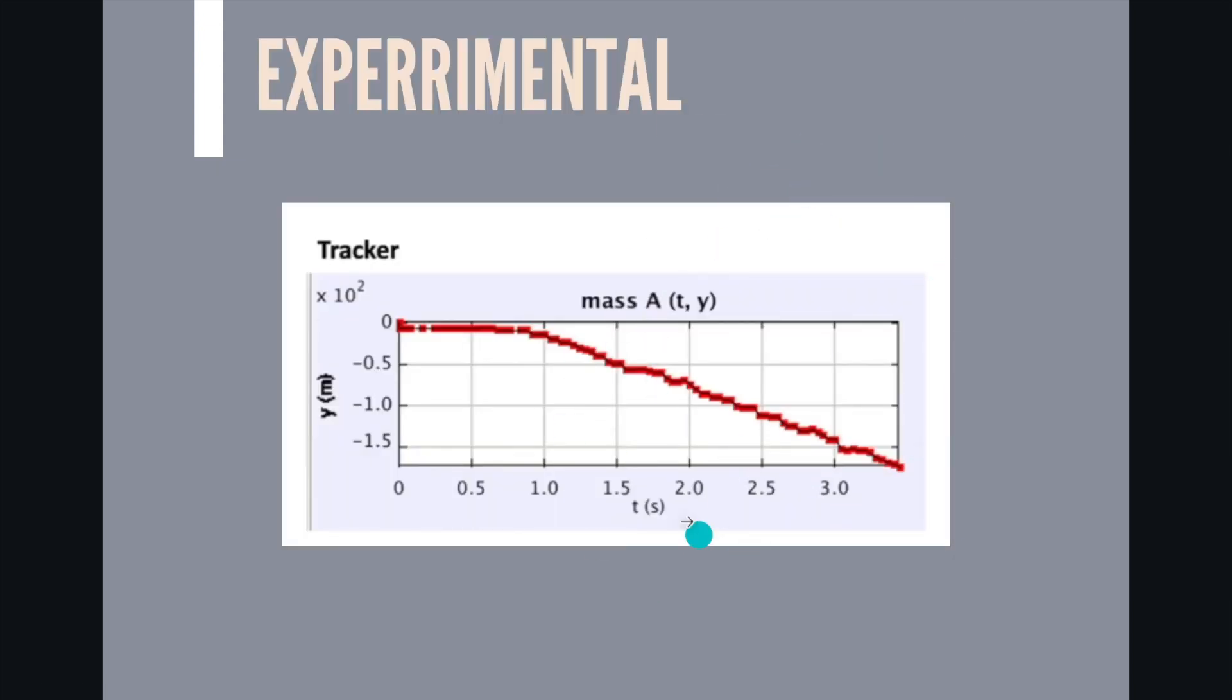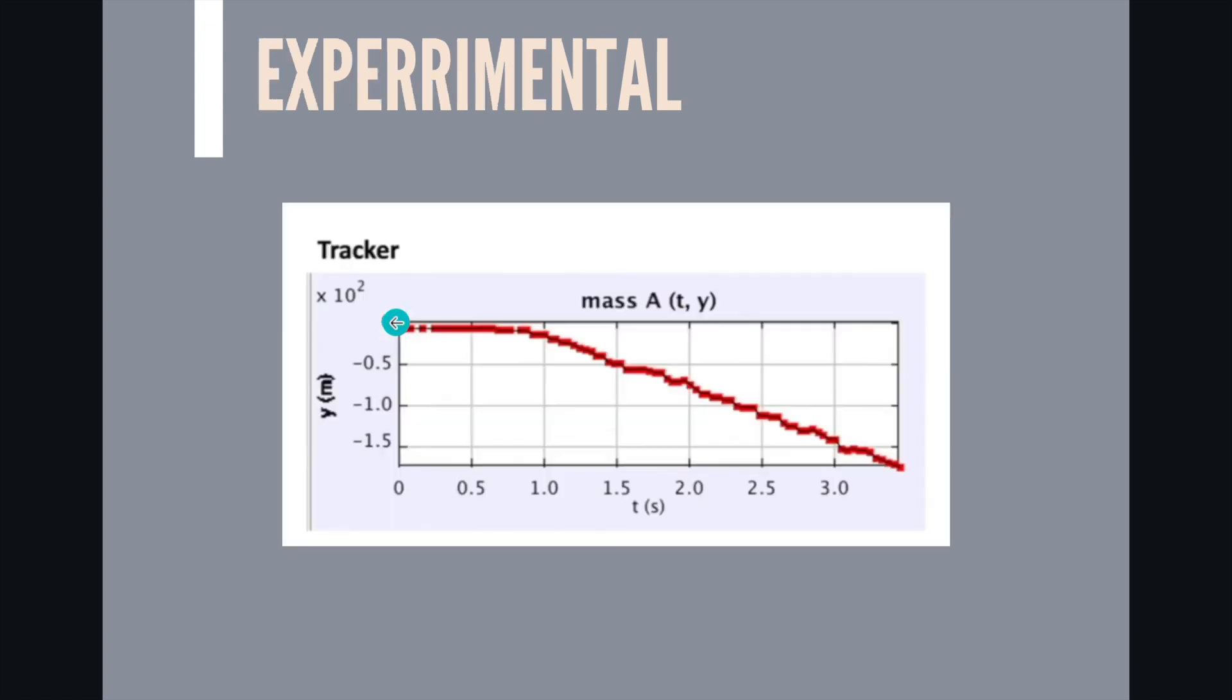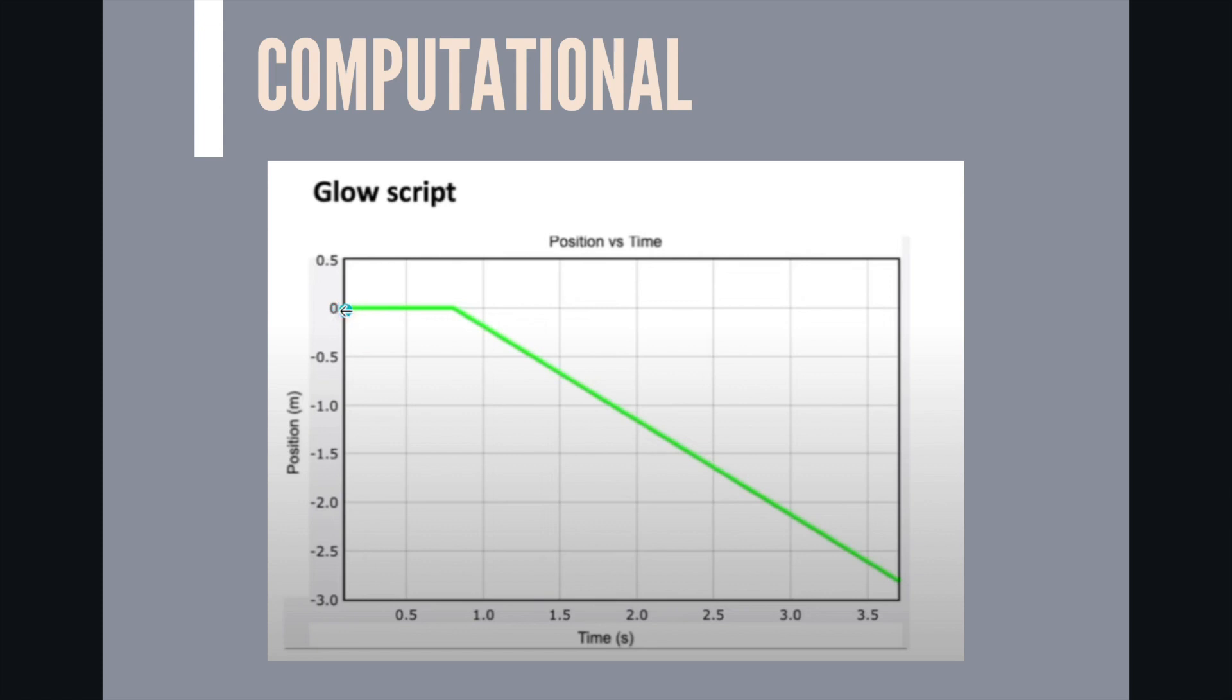This is the graph that we had for the experimental where we see that in the y axis it was first just the x moving because the y wasn't changing and then once the slinky stopped being stretched it starts downward sloping until it hits the ground. This is the computational model that we get which in theory is very similar but here it's without source of error so it's also a downward sloping.